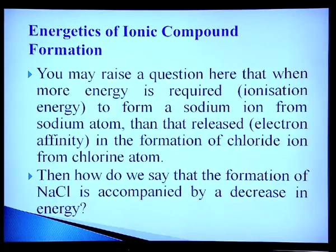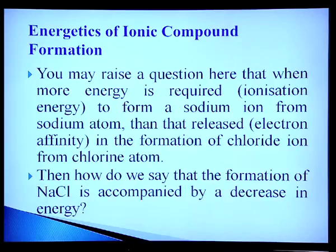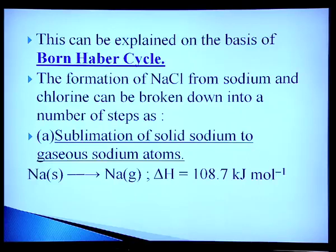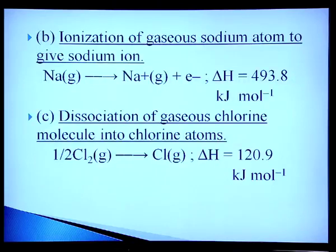Regarding the energetics of ionic compound formation, you may raise a question: when more energy is required by ionization enthalpy to form a sodium ion from a sodium atom than that released by electron gain enthalpy in the formation of a chloride ion from a chlorine atom — sublimation of solid sodium to gaseous sodium gives ΔH = 108.7 kJ/mol, and ionization enthalpy of gaseous sodium gives ΔH = 493 kJ/mol.